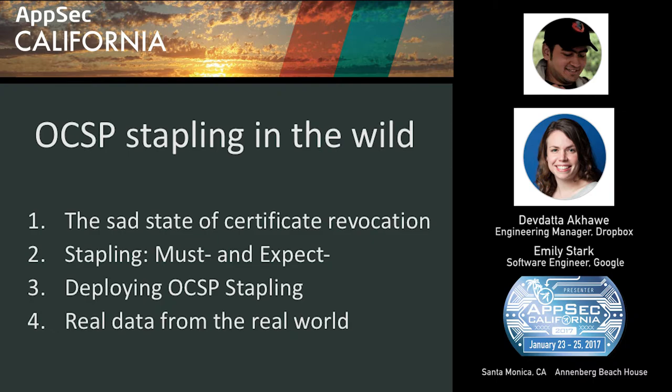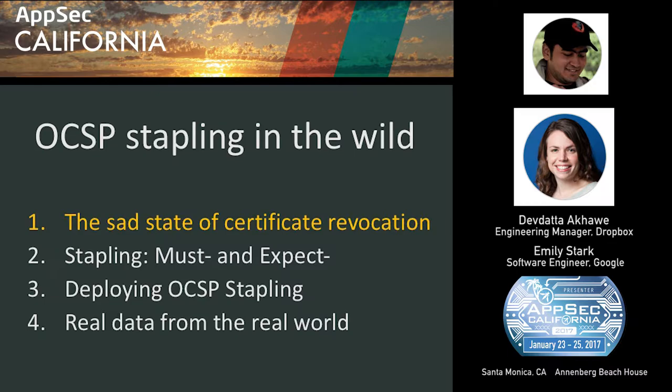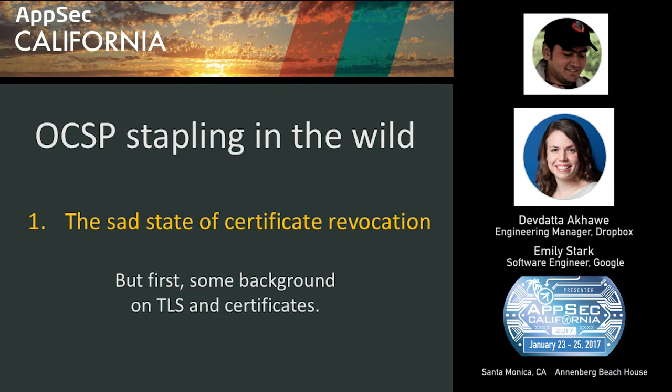Today I'm going to give you more background about the mess that is certificate revocation on the web, tell you about the current state of the art, what solutions we've tried, and what went wrong. Then I'll talk about OCSP stapling — a fairly promising solution that might solve our problems but is not particularly well-deployed or well-studied. My co-presenter Dev, from Dropbox, is then going to tell you about their experience setting up infrastructure for revocation and how they used an experimental Chrome feature to evaluate their revocation setup.